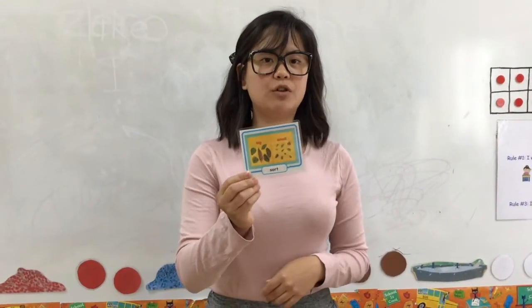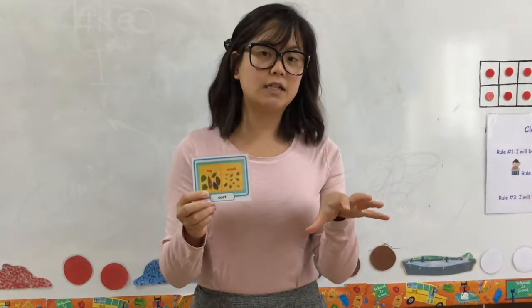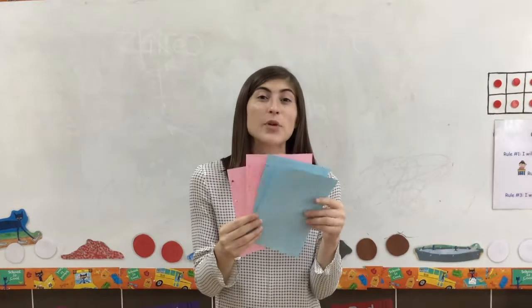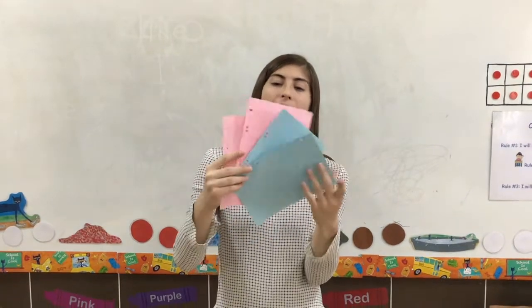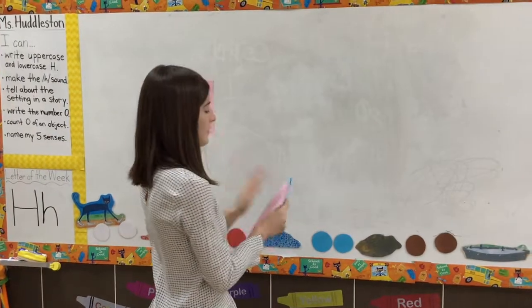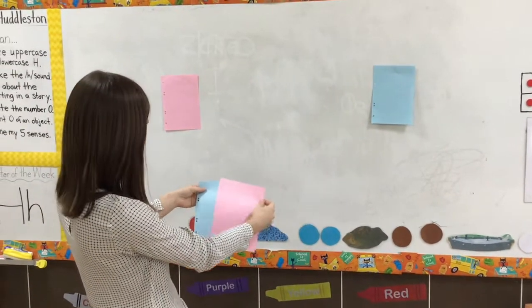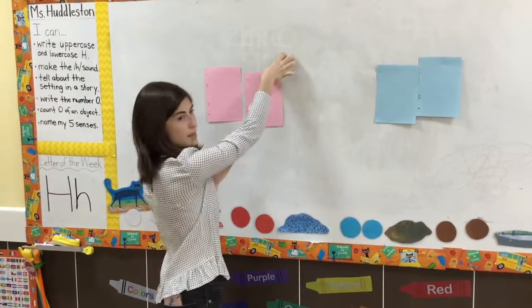Sort. Sorting is when you have lots of different things and you're going to put them into two groups. You find something that is the same about them and put them into two groups. Here I have some paper. I'm going to sort them by their color. I have blue and pink. I'm going to put the pink on this side and the blue on this side.